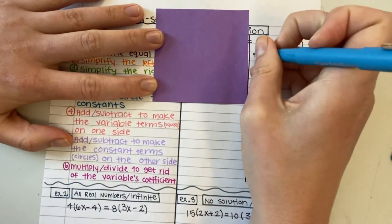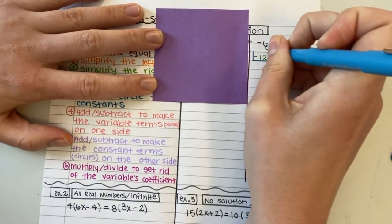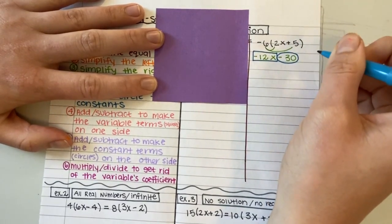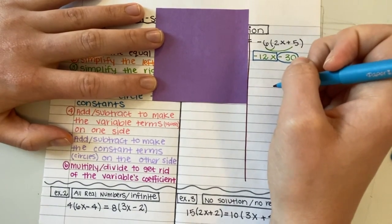This is already just two terms. One variable term and one constant. So that is as simple as this side can be. So I am ready to move on.